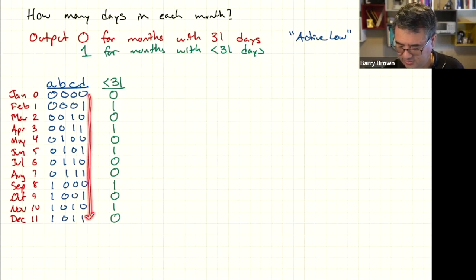I'm numbering them from zero. So January is zero up to 11 for December. Here are the 4-bit codes for those months. And then here are the ones and zeros. So January has 31 days, so the output is zero. February has less than 31 days, so I'm going to output a one.